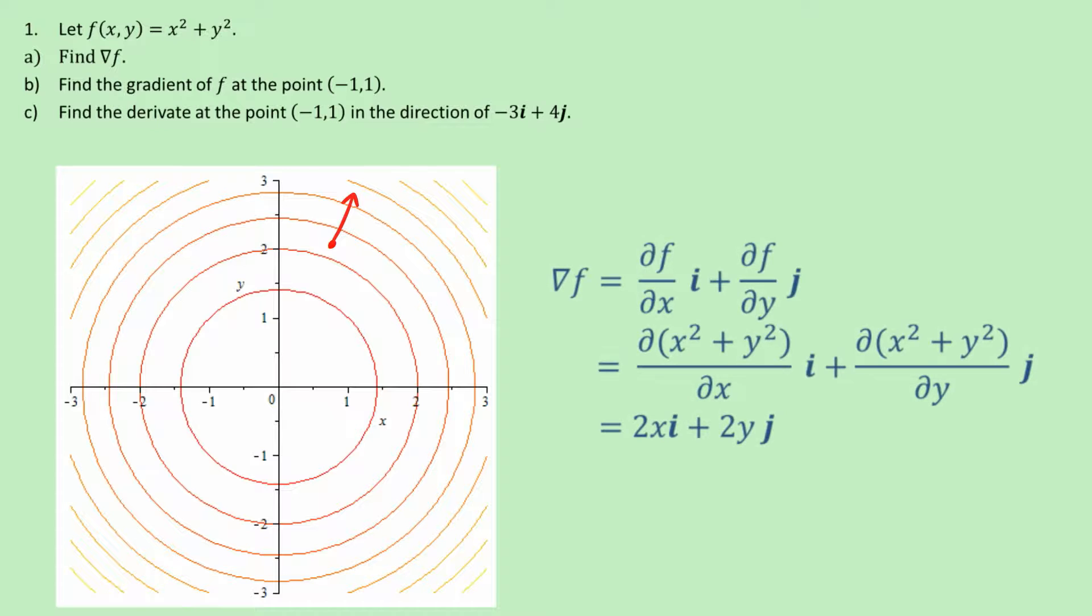How do we actually work it out? Well, we take the partial derivative of f with respect to x and that goes in front of the unit vector in the x direction, which we call i. And then we add to it the partial derivative of f with respect to y in the y direction. And there we use the unit vector in the y direction is j. So that enables us to work out the vector, and that would be the answer to problem a.